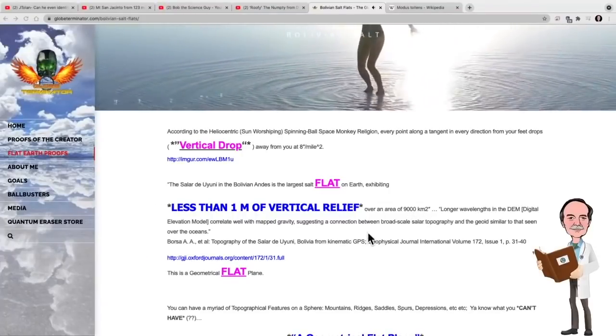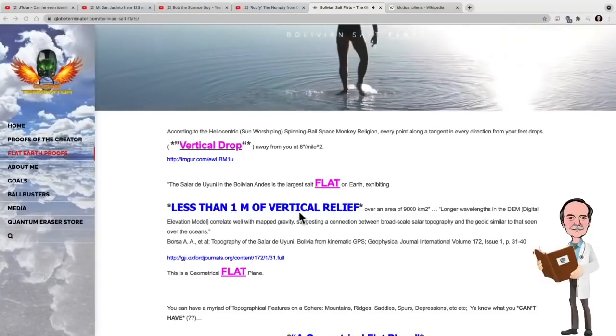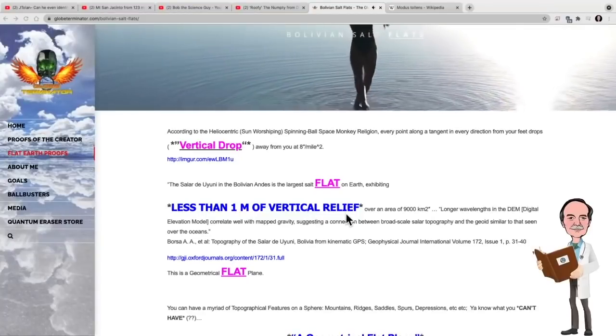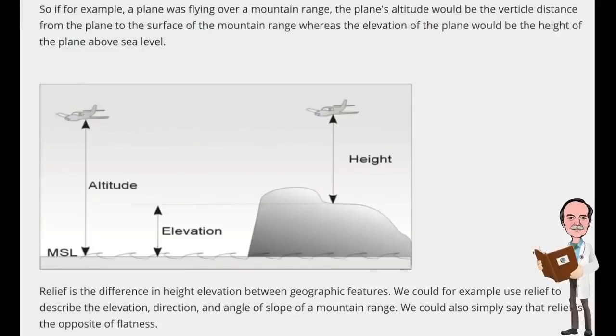Now again, what's wrong with this? Why does he say one meter of vertical relief? Why doesn't he say curvature here? The reason that he says vertical relief is that he's trying to subtly manipulate his audience into a false premise. So let's go ahead and have a look at the different ways that we measure elevation and distance from the ground on Earth.